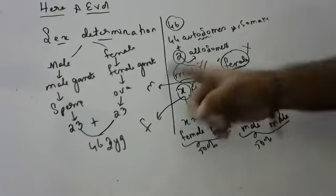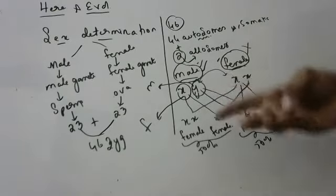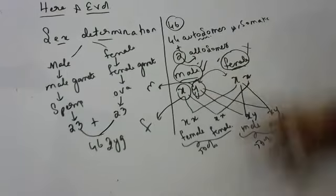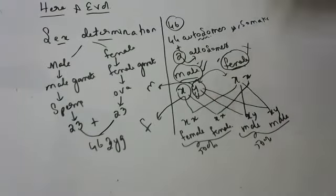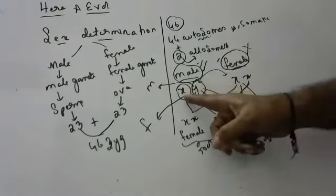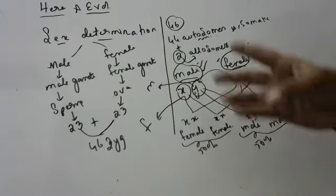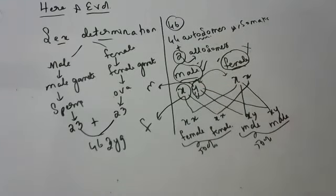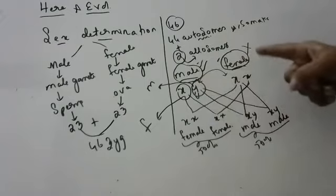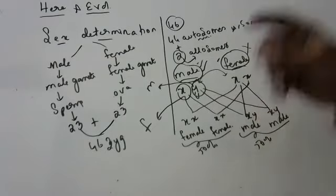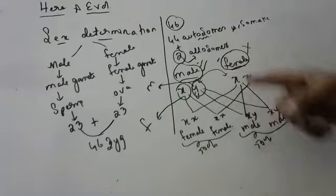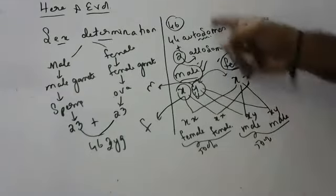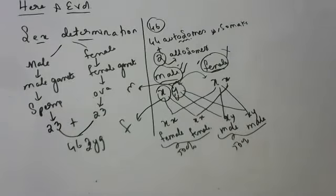For the exam, you have to write: males have XY chromosomes, females have XX chromosomes. If X of male unites with X of female, a female baby comes. If Y of male unites with X of female, a male baby comes. You must draw this chart to show sex determination.